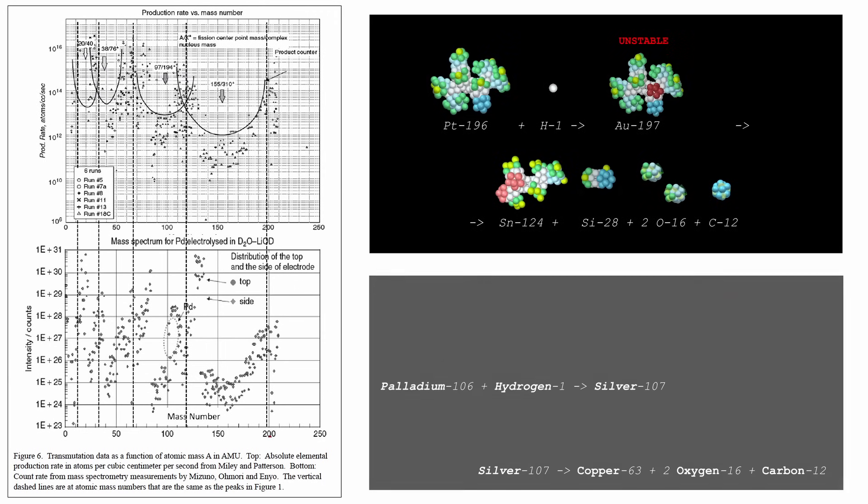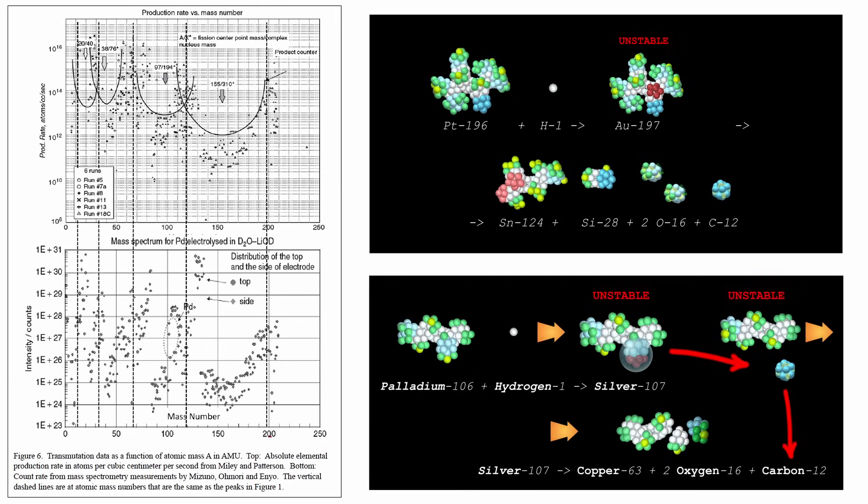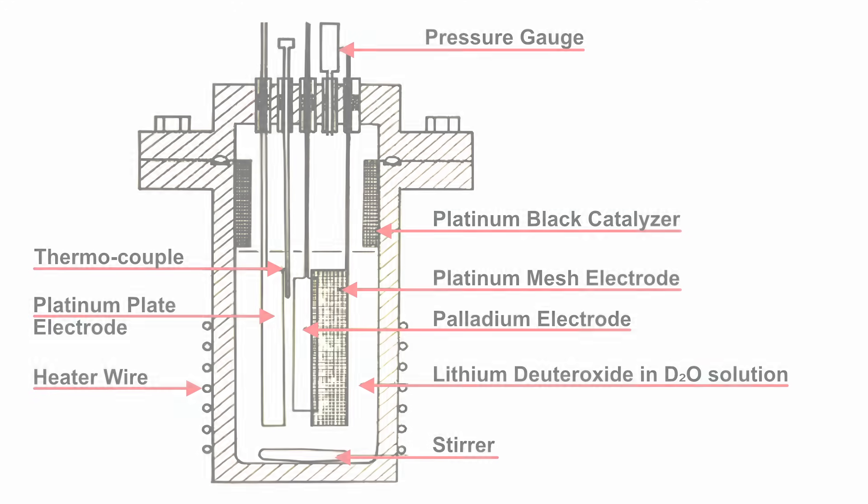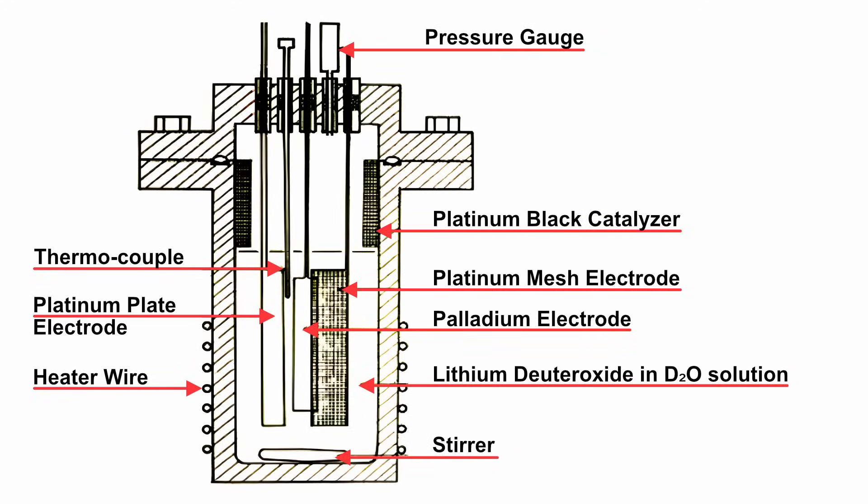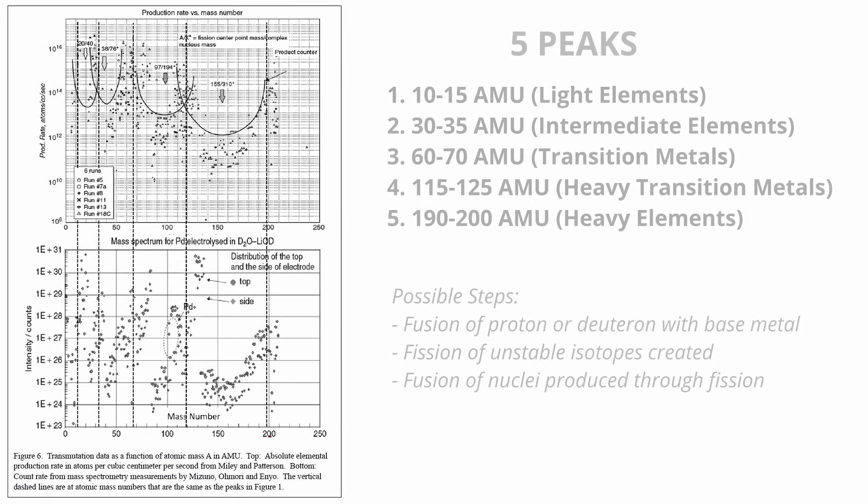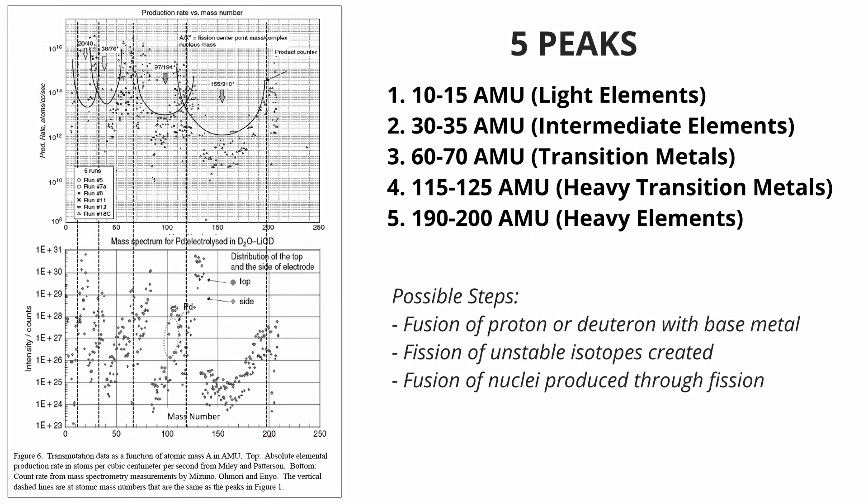The observed products, including elements at the five peaks, imply non-linear pathways involving multiple nuclear fragments interacting simultaneously. The absence of high-energy radiation or significant neutron flux in LENR experiments further distinguishes these processes from conventional nuclear synthesis. These differences highlight the mystery surrounding LENR. How can such complex nuclear transformations occur at low energies? What mechanisms enable the fusion and fission of large fragments to produce stable isotopes without high-energy signatures or traditional nuclear reactions?